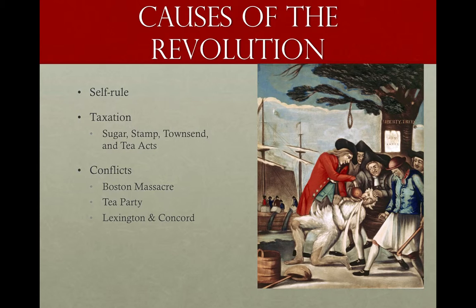Since the Sugar Act wasn't generating enough money, Britain tried the Stamp Act, putting a tax on stamps that go on every paper product. That didn't turn out well — people revolted and burned the stamps, especially in cities like Boston where there were riots. So the British backed off. Then a couple years later they tried the Townshend Acts, and again the colonists boycotted and threw a hissy fit, so Britain backed off again.